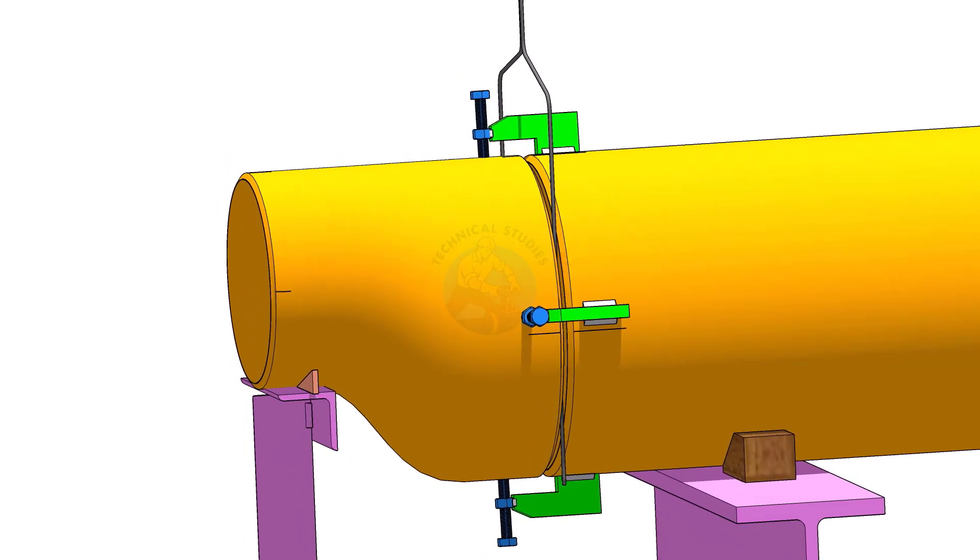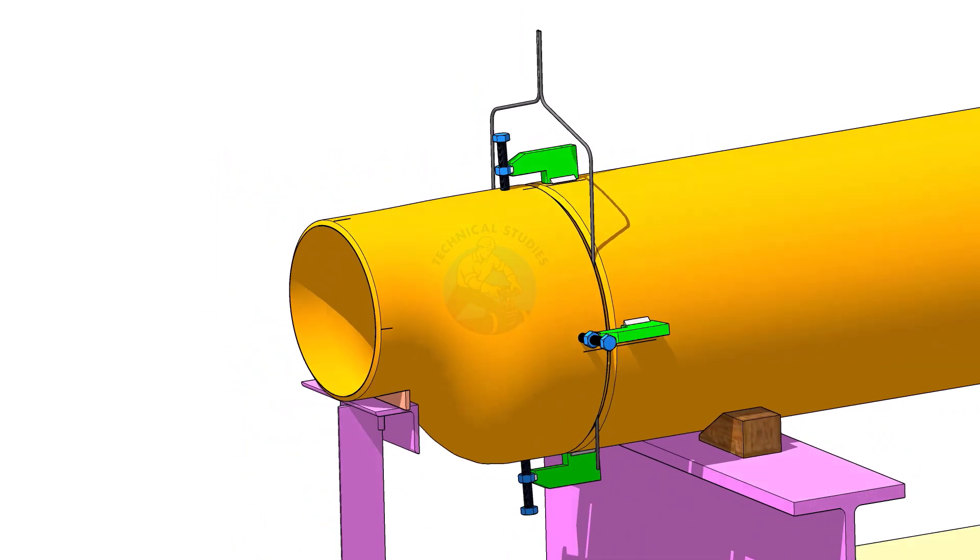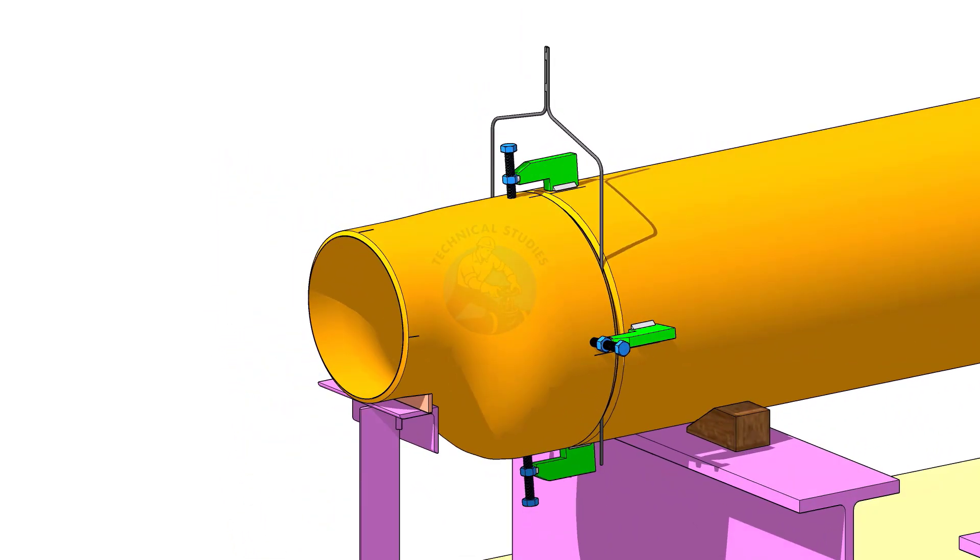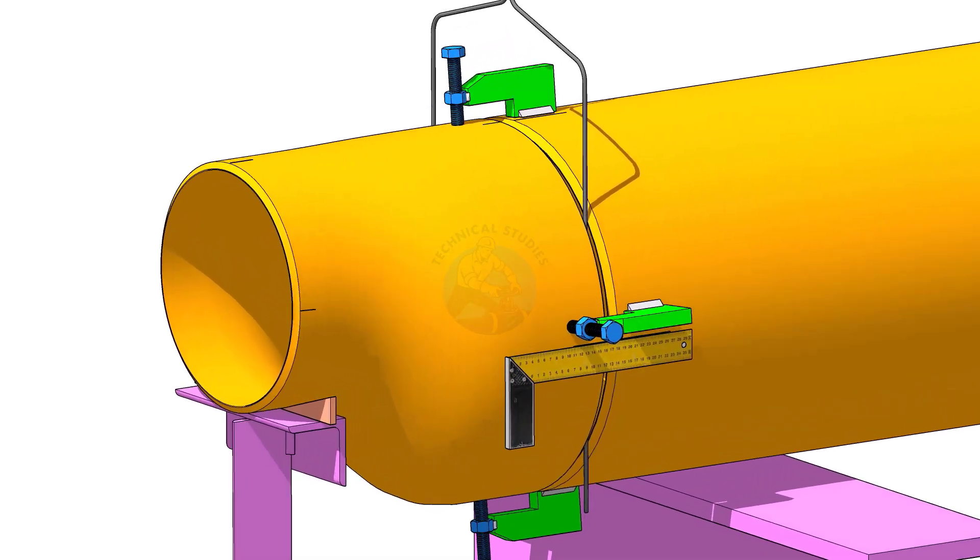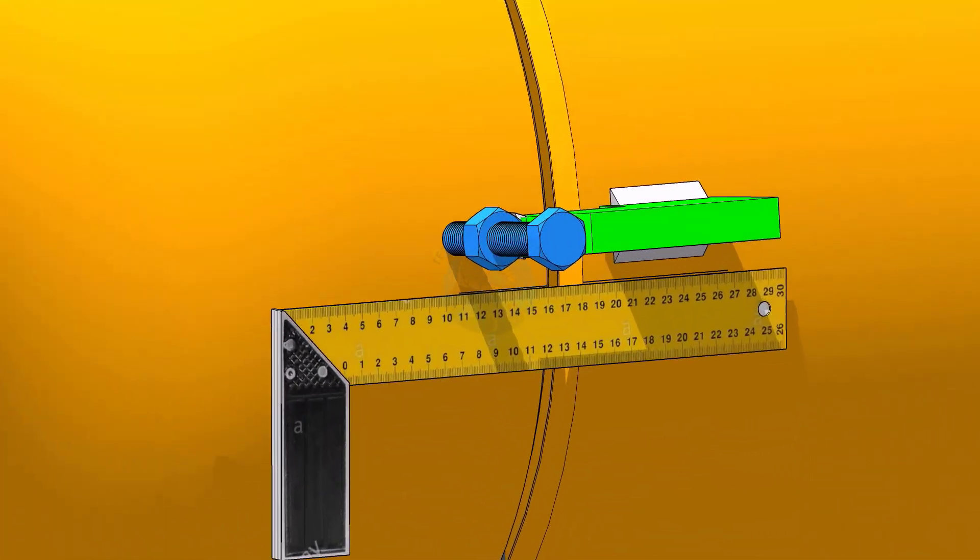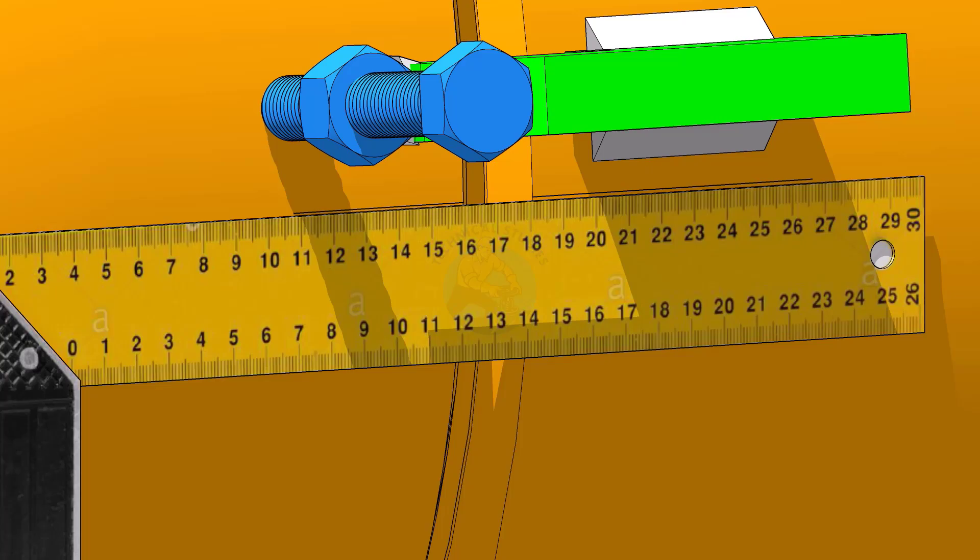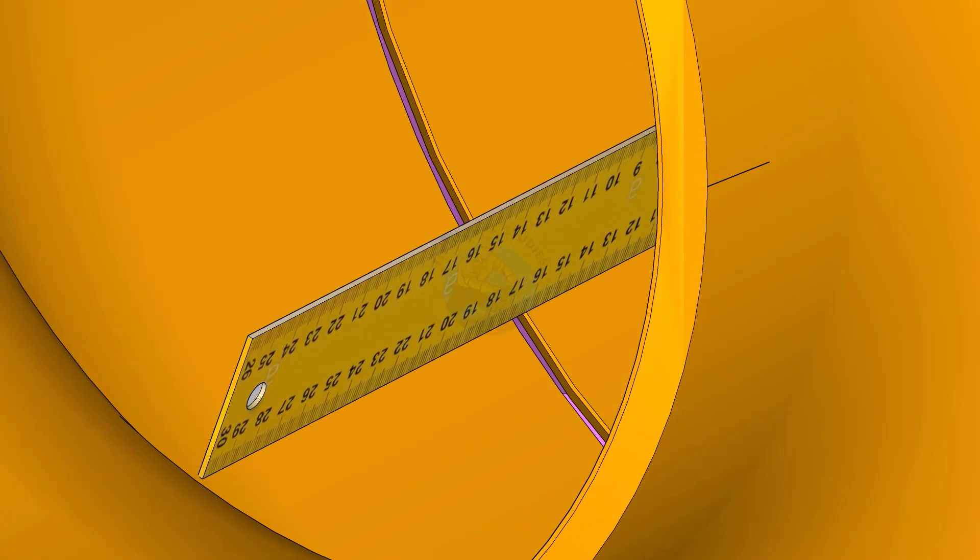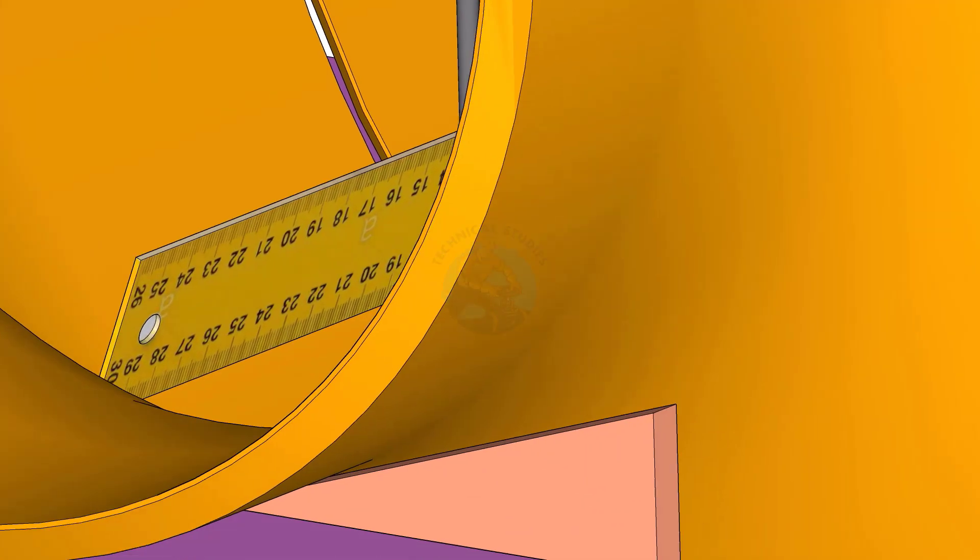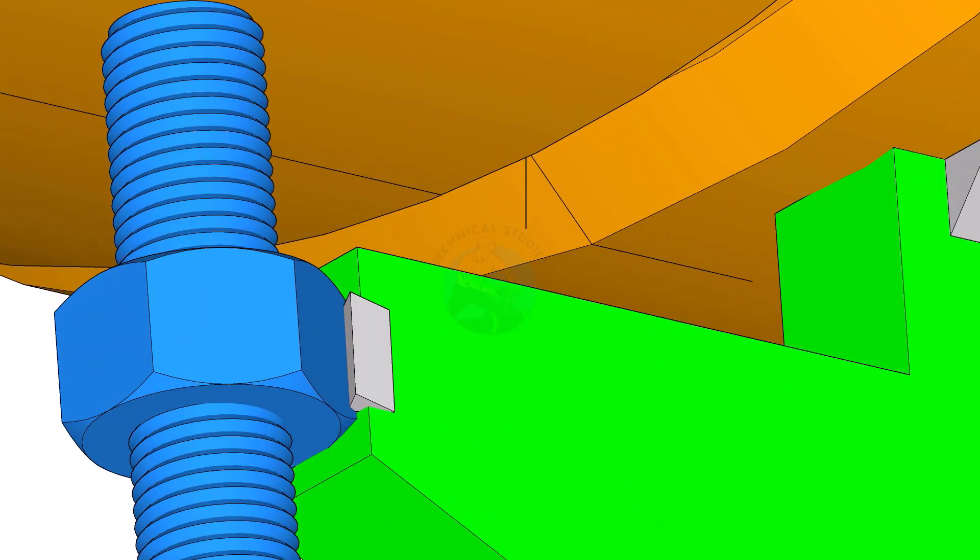Match the center lines on the pipe and on the reducer. By adjusting the jack bolts, correct the overlap of the joint inside the pipe.